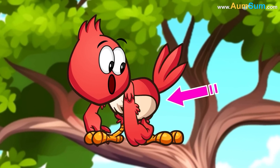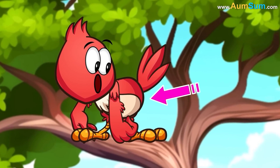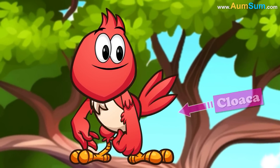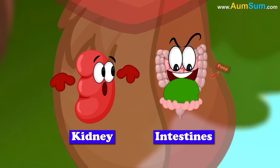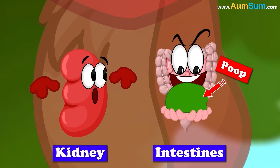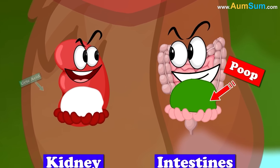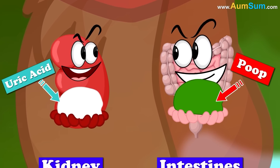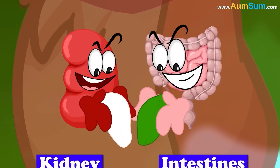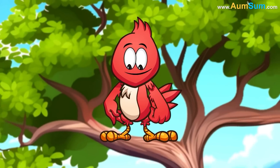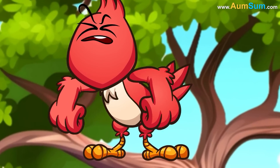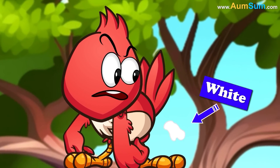Birds have only one exit point called the cloaca. The poop from the intestines — that is the green part — and the uric acid from the kidneys are excreted at the same time. Hence, bird poop appears white.